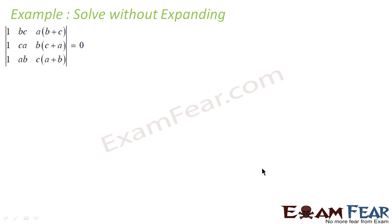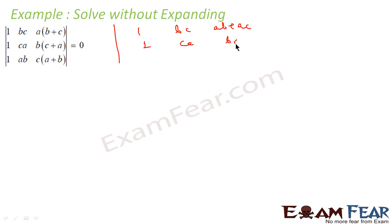For the next problem, we don't know the approach immediately, so let's expand first to get a clue. Expanding: a into (b+c) = ab + ac; the second row gives bc + ba; and the third row gives ca + cb. This gives us a new matrix to analyze.